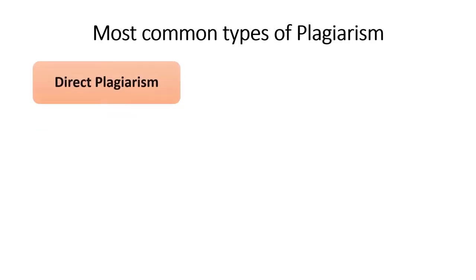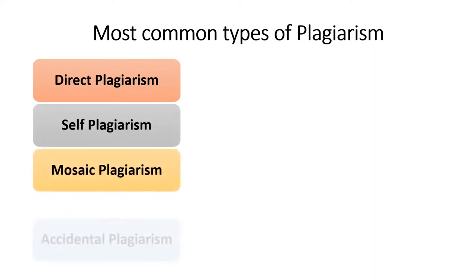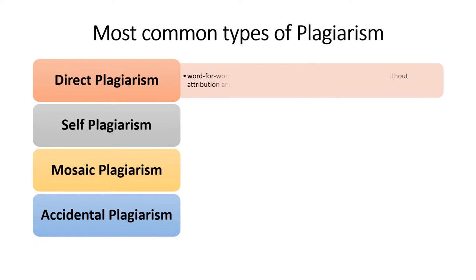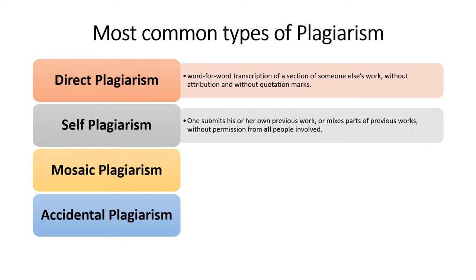Generally, plagiarism is classified into four categories: direct plagiarism, self-plagiarism, mosaic plagiarism, and accidental plagiarism. Direct plagiarism means word-for-word transcription of a section of someone else's work without attribution or without quotation marks — you have taken something directly without giving proper attribution to the original writer. Self-plagiarism is very common, where one submits his or her own previous work, or mixes parts of a few previous works to create a new work without permission from all who were involved or without giving proper citation to the old work.